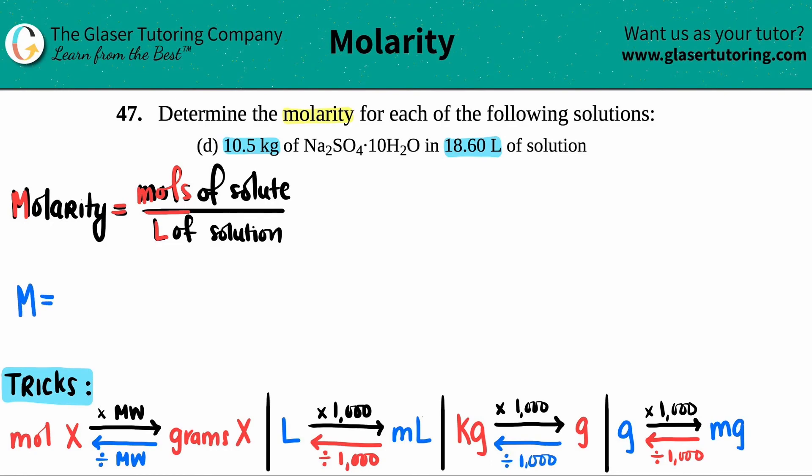Did they give us a mole or did they give us a liter? Well, they didn't give us a mole value - they gave us a kilogram. But they did give us a liter, so I know that this bottom has to be 18.60 liters. The thing is, we have to first convert the 10.5 kilograms into moles.